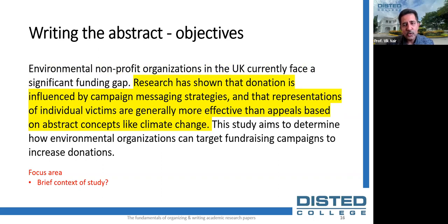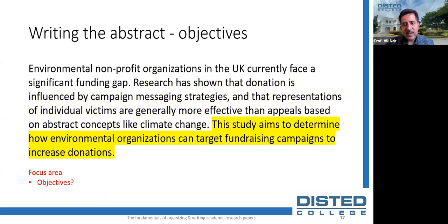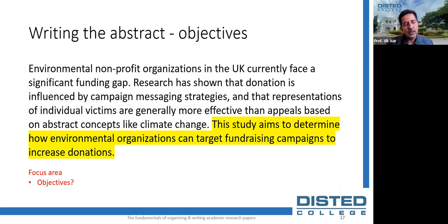After identifying the problem, state the objectives of the research. You can use verbs like 'to investigate,' 'to test,' 'to analyze,' 'to evaluate,' or 'to describe' to explain exactly what you are trying to do in this publication. This part of the abstract can be written in present or past tense, and you should never refer to future trends as the research is already completed.